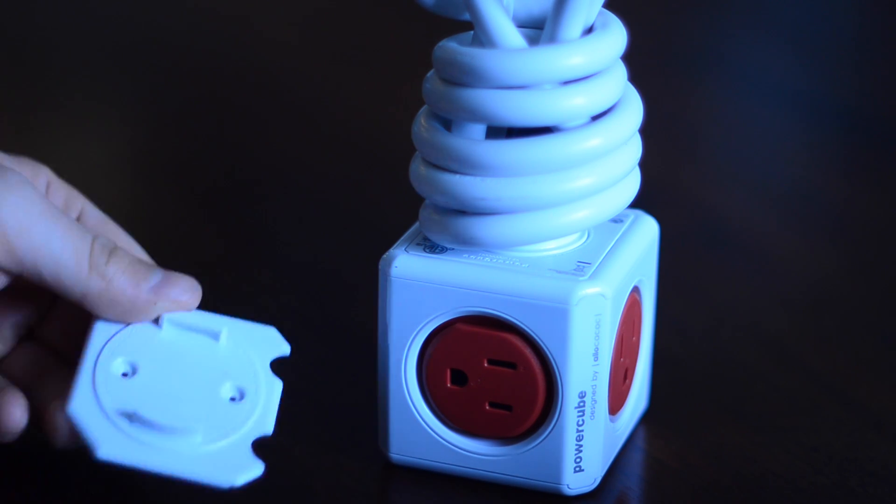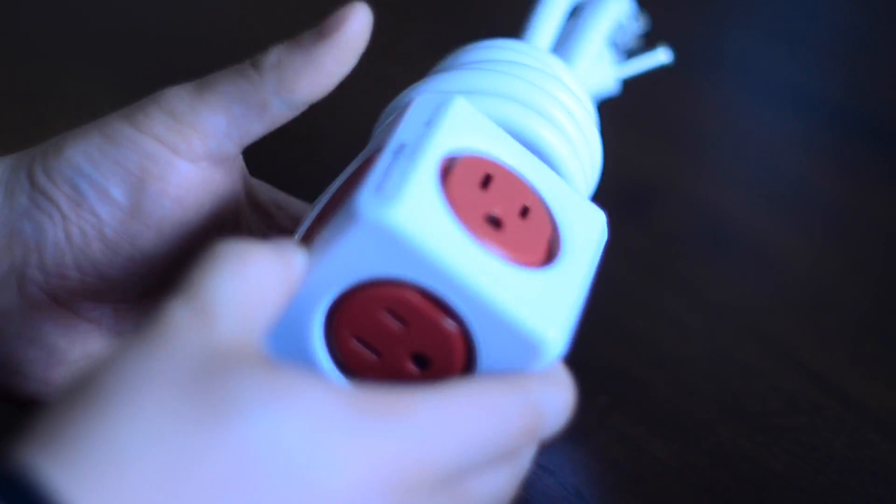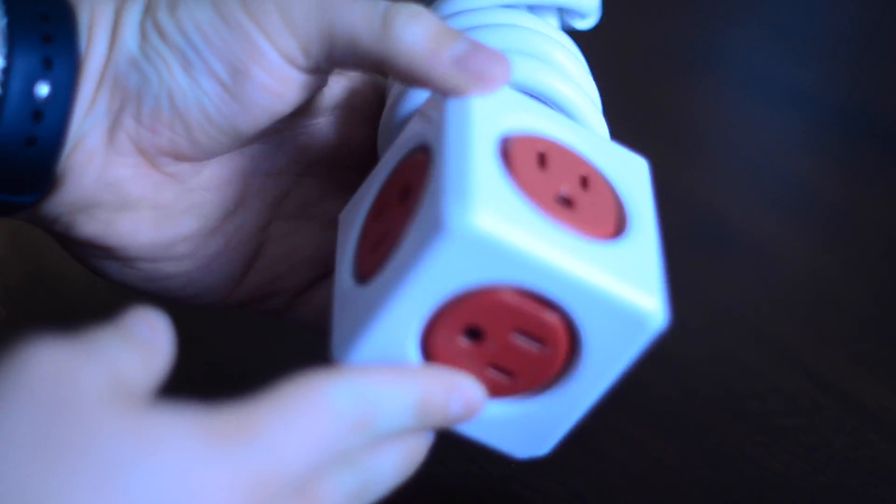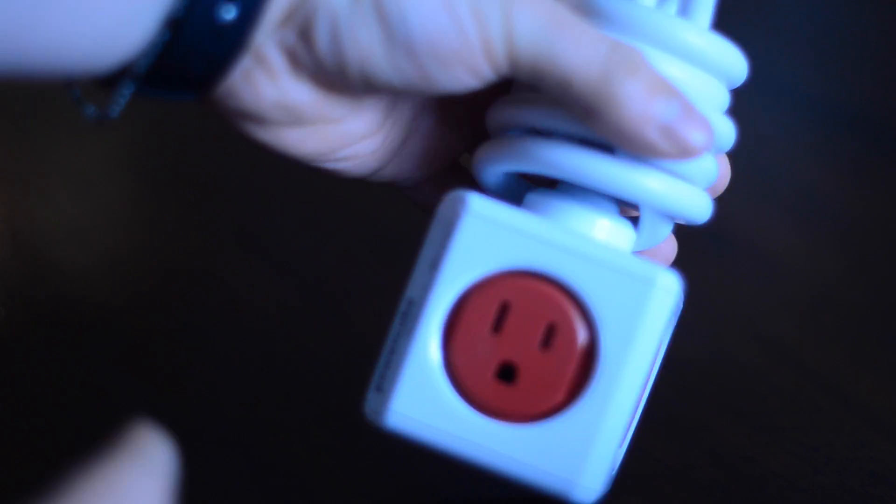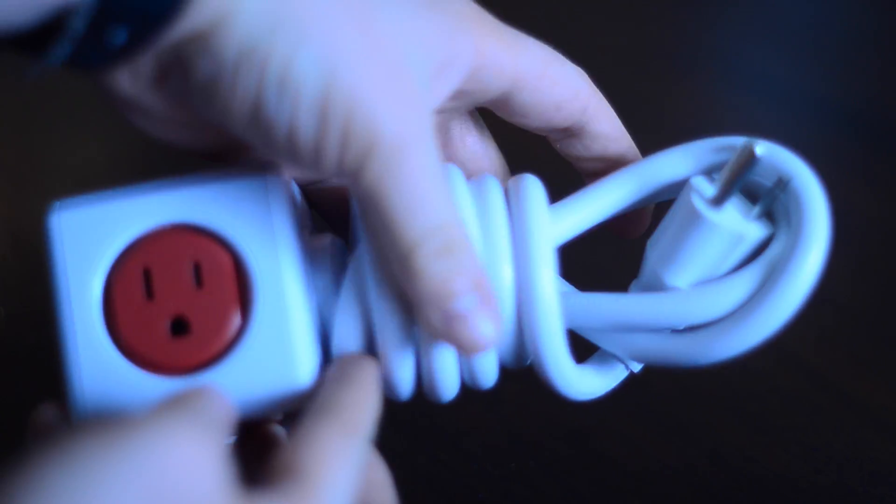The PowerCube itself is fairly simple. It is exactly a cube with five outlets. One on each side and then one on the top. The bottom side obviously has the cord extending out from underneath of it.